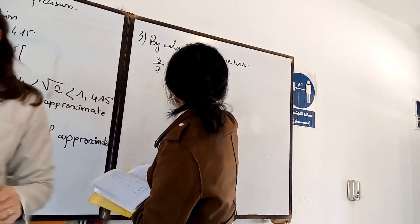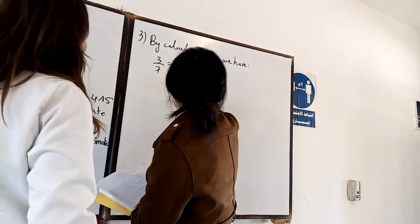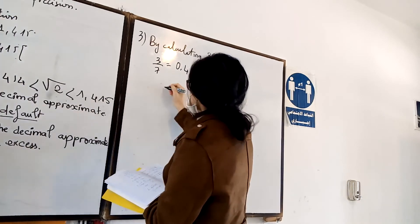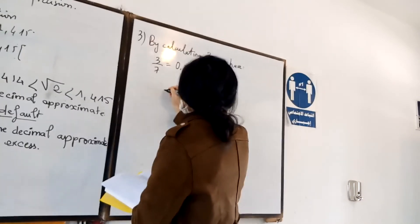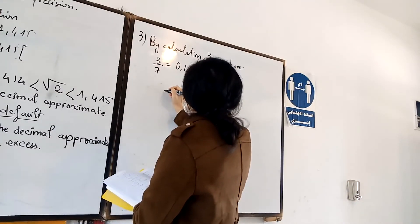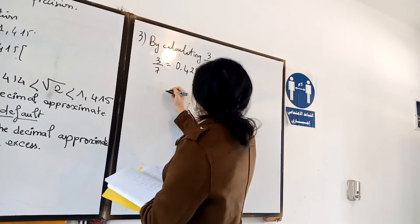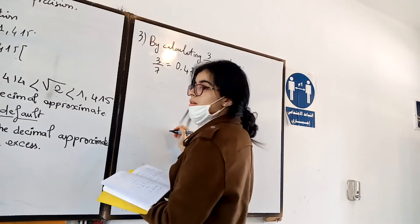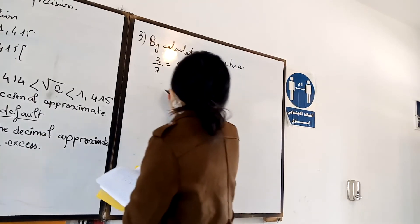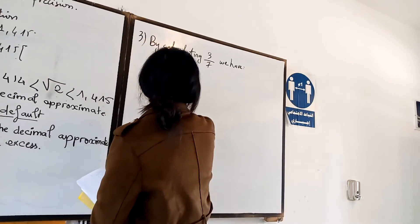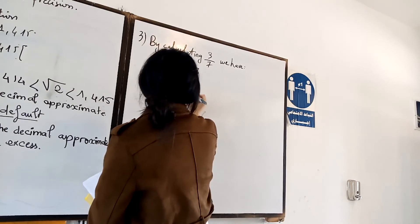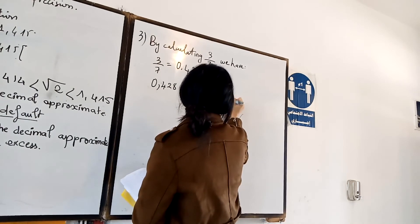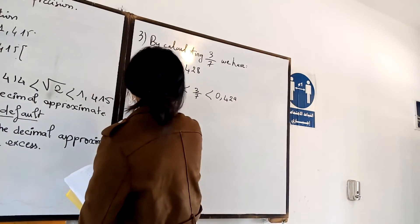3 over 7 equals approximately 0.428. So what is the precision here? What is the default and excess here? 0.428 is the default and 0.429 is the excess. It's okay.